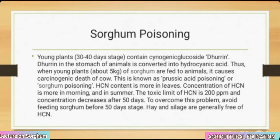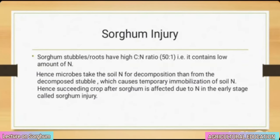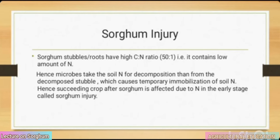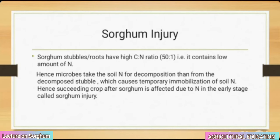Sorghum injury: sorghum stubbles or roots have a high C:N ratio of 50:1, meaning they contain a low amount of nitrogen. Hence microbes take soil nitrogen for decomposition rather than from the decomposed stubble, causing temporary immobilization of soil nitrogen. As a result, the succeeding crop after sorghum is affected by nitrogen deficiency in the early stage — this is called sorghum injury.